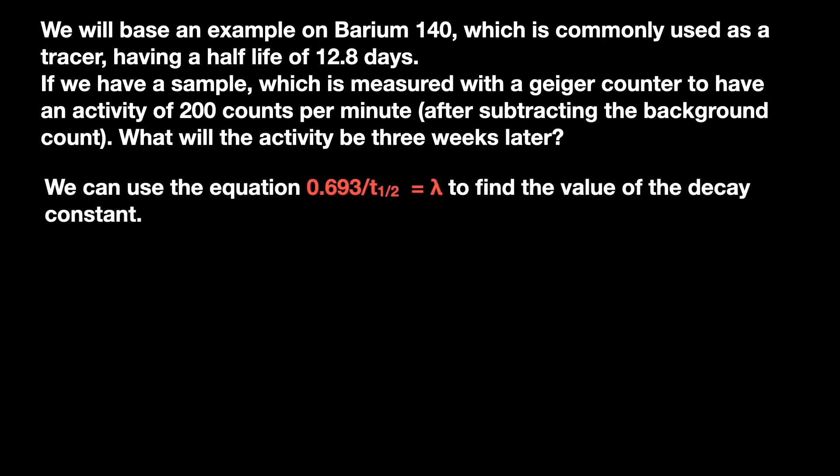We can use this equation to work out the decay constant. We'll work in days so that lambda is going to be 0.693 divided by 12.8, which as you can see works out at 0.0541 days to the minus 1.